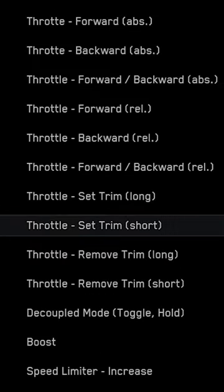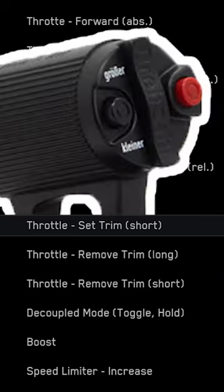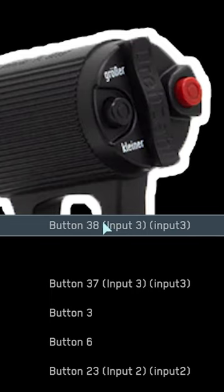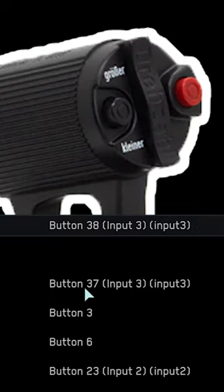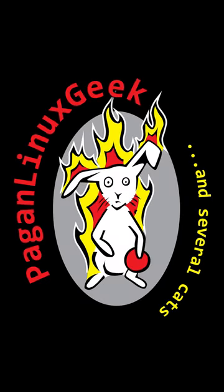I've bound these to two different controls on my VKB throttle on my left side. The big red button on the throttle turns it on, and the small black button turns it off. I hope that answers your question. Thank you for watching and commenting on the video.